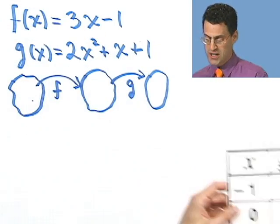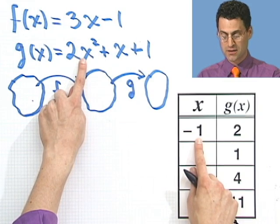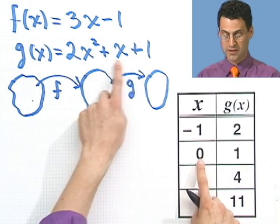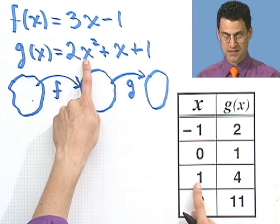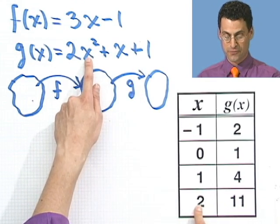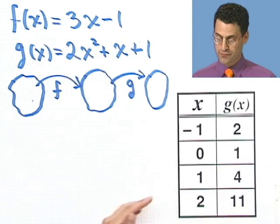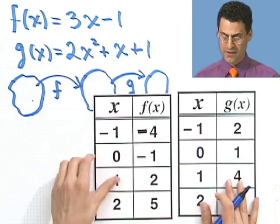Let me show you a chart of some values for g. For example, if I put in minus 1 for x, I see a 2 minus 1 plus 1 is 2. If I put in a 0 for x here, I see 0, 0, 1. If I put in a 1, I see 2 and 1 and 1 is 4. If I put in a 2, I see 4 times 2 is 8, 9, 10, 11. So in fact, this is a chart for the g values. And this is a chart here for the f values.